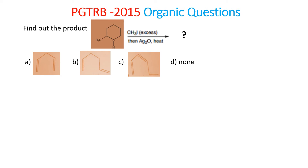Welcome to my channel VinChem. Today we are going to see PGTRV 2015 organic equations. Find out the product for this reaction: piperidine reacting with methyl iodide, with excess methyl iodide and silver oxide on heating. What will be the product?